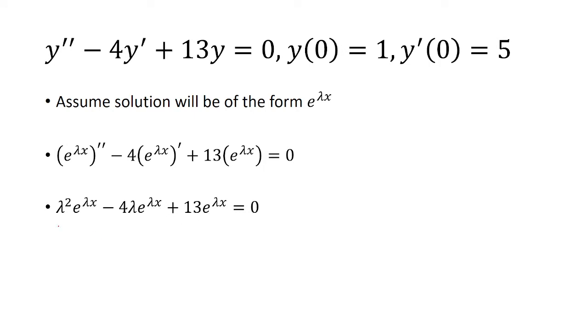And so that's λ²e^(λx) - 4λe^(λx) + 13e^(λx) = 0. Now I can factor out e^(λx) from every term, and then we have λ² - 4λ + 13 = 0.